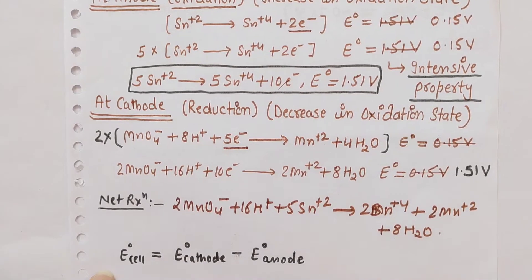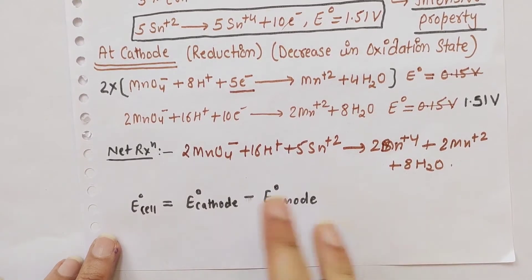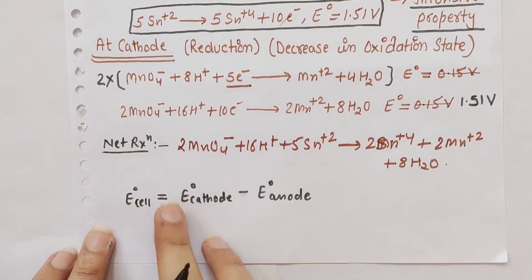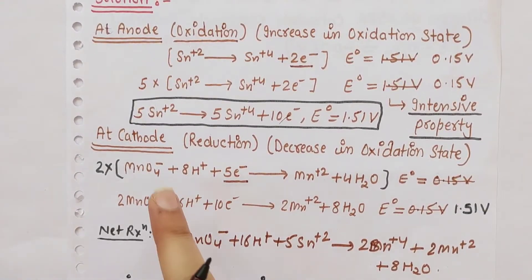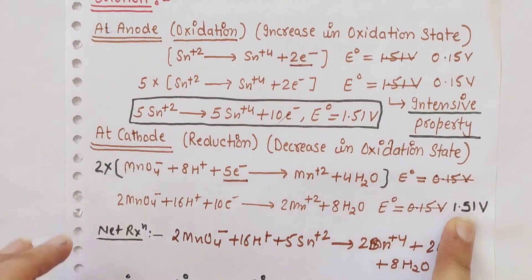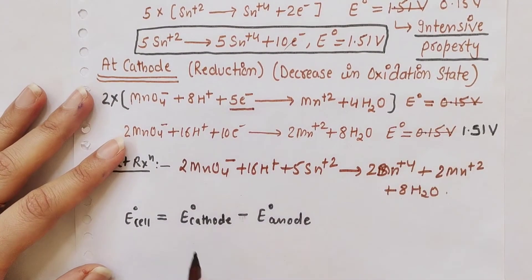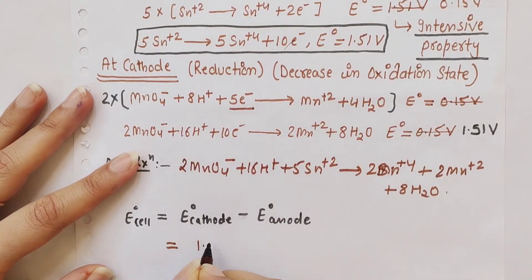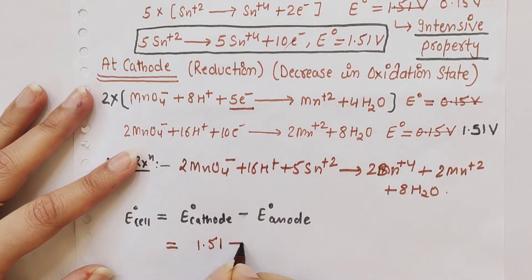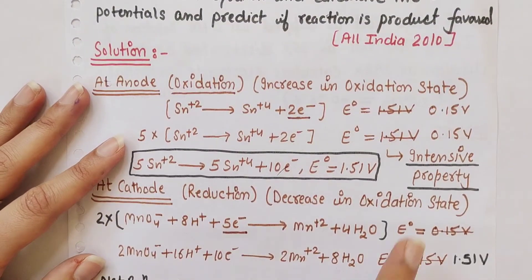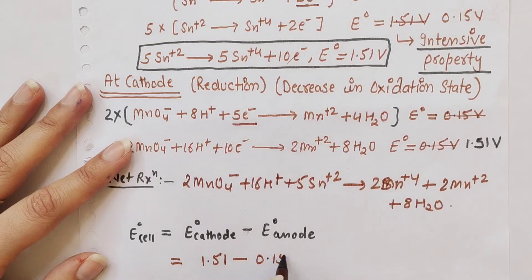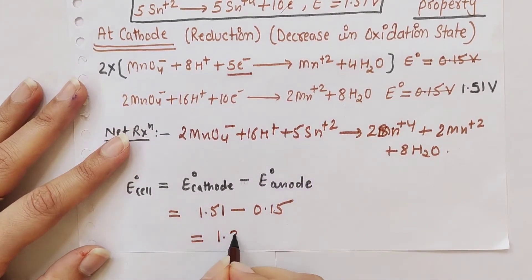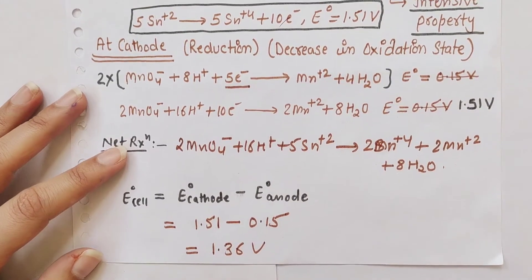Now to find the EMF: E°cell = E°cathode - E°anode. E°cathode is 1.51 volts minus E°anode which is 0.15 volts. This equals 1.36 volts.